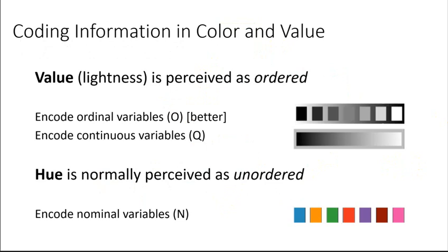Okay, some general rules of thumb. The value, or how light or dark something is, and the intensity, these are perceived as ordered. So be careful to use these for continuous numeric values or ordinal data. Hue, or color, is typically perceived as unordered. So you're going to use this to encode nominal data. State names, territories, types of things.